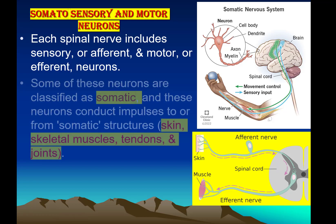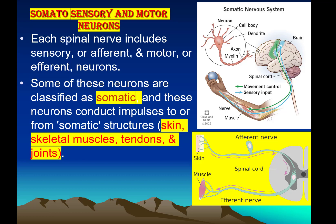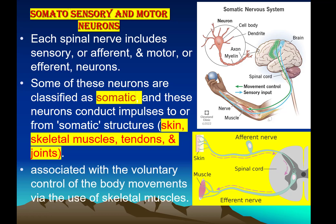Some of these neurons are classified as somatic, and these neurons conduct impulses to or from somatic structures like skin, skeletal muscle, tendons, and joints. These neurons are associated with voluntary control of body movements through the skeletal muscle. They have receptors in the skin, joints, and muscles, and when they bring impulses to the spinal cord, skeletal muscle movements are controlled.